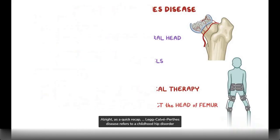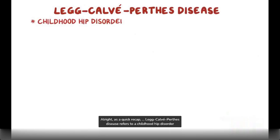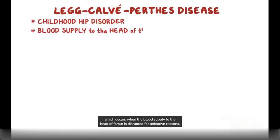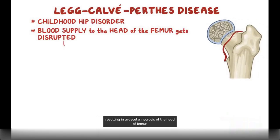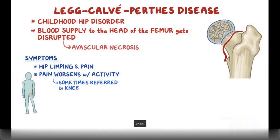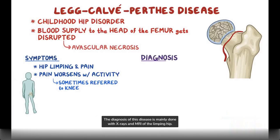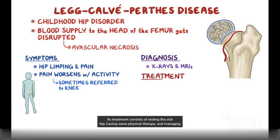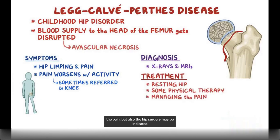As a quick recap, Legg-Calvet-Perthes disease refers to a childhood hip disorder which occurs when the blood supply to the head of the femur is disrupted for unknown reasons, resulting in avascular necrosis of the femoral head. Children have hip limping and pain which worsens with activity, and it may be referred to the knee. Diagnosis is mainly done with x-rays and MRI. Treatment consists of resting the hip, physical therapy, and managing the pain, though hip surgery may also be indicated.